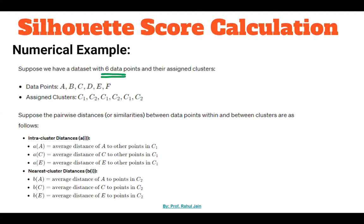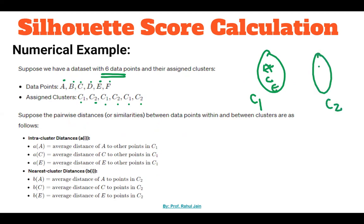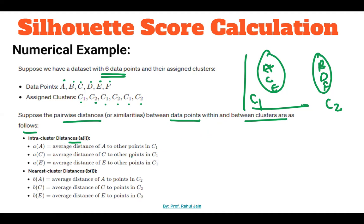Let's do one problem. Suppose we have a dataset with six data points: A, B, C, D, E, F, and the assigned clusters are C1 and C2. Cluster C1 contains data points A, C, and E, while cluster C2 contains data points B, D, and F. The pairwise distances within and between clusters are given. The intra-cluster distance a(A) is the average distance of A to other points in C1 — that is, A to C and A to E.